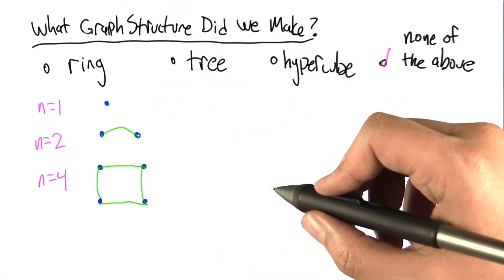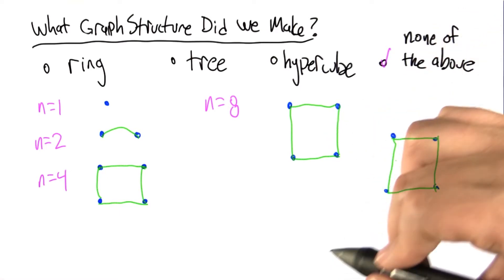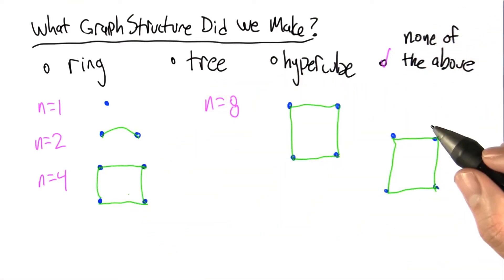Let's move up to n equals 8. In the n equals 8 case, we first generate two n equals 4 graphs, which we know what they look like from before. Then we arbitrarily order these nodes in the two different graphs and connect up the corresponding nodes.